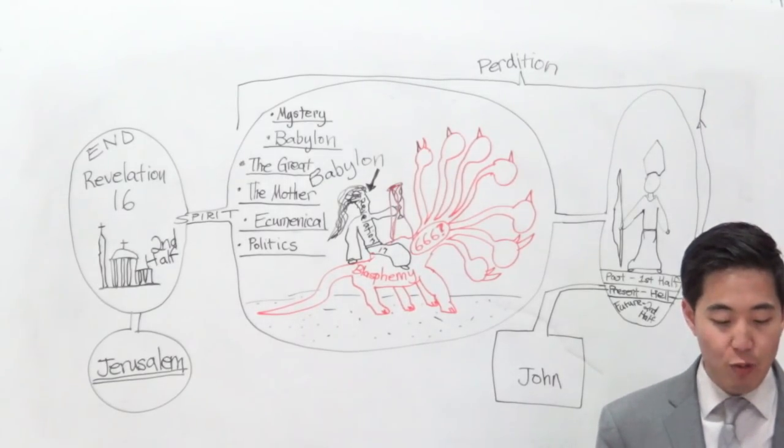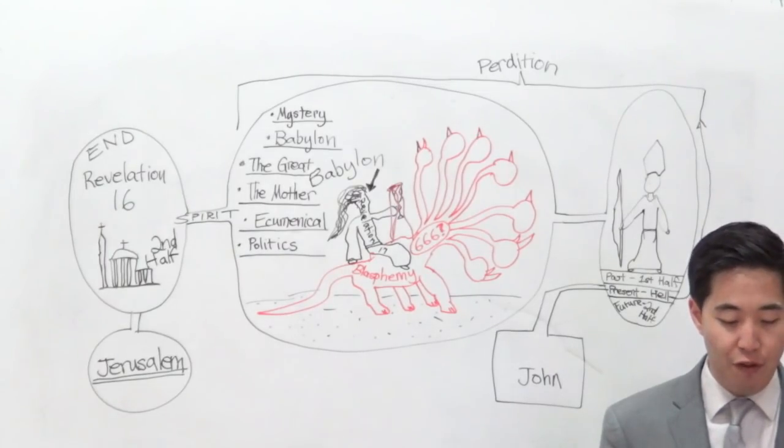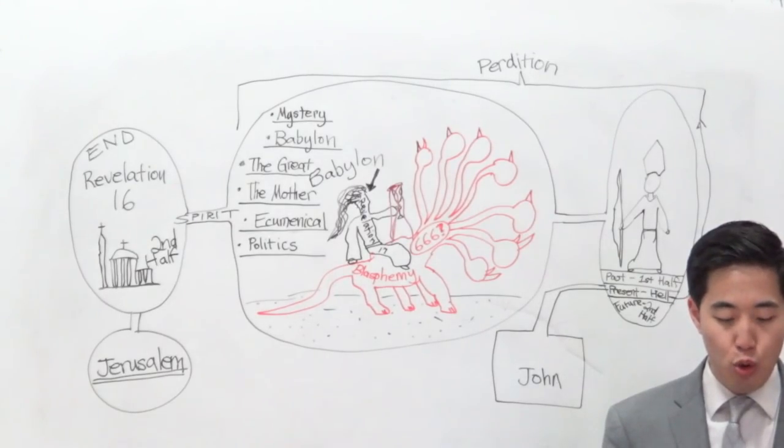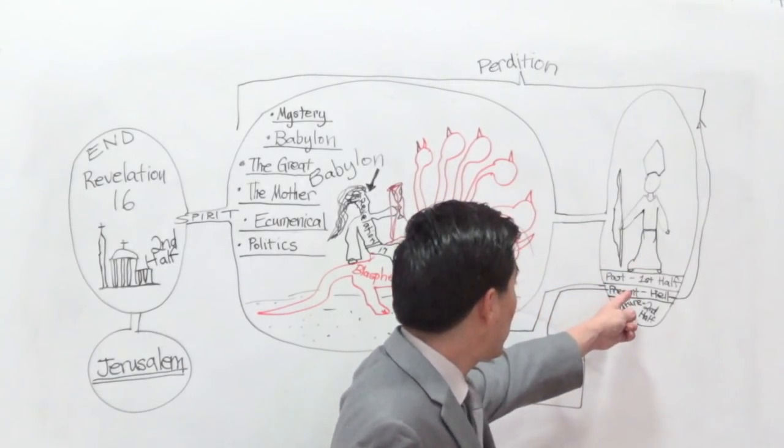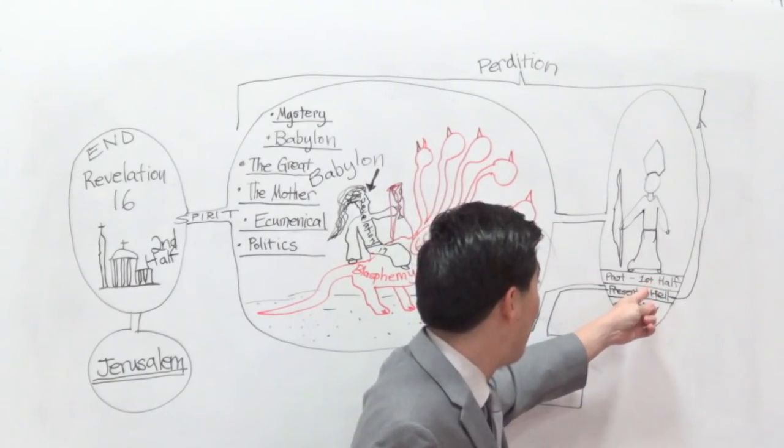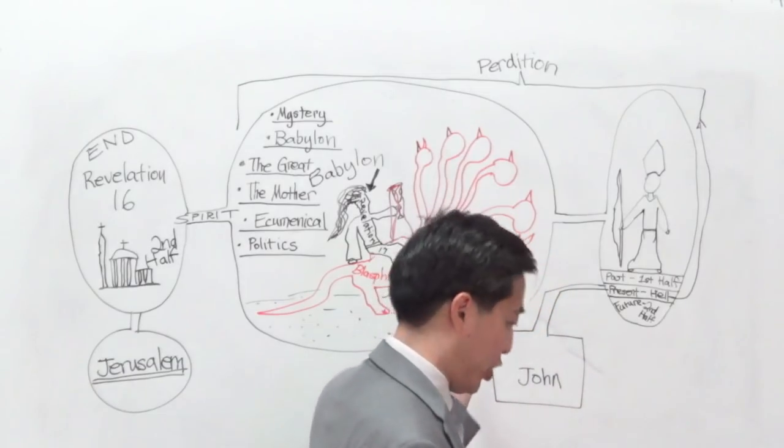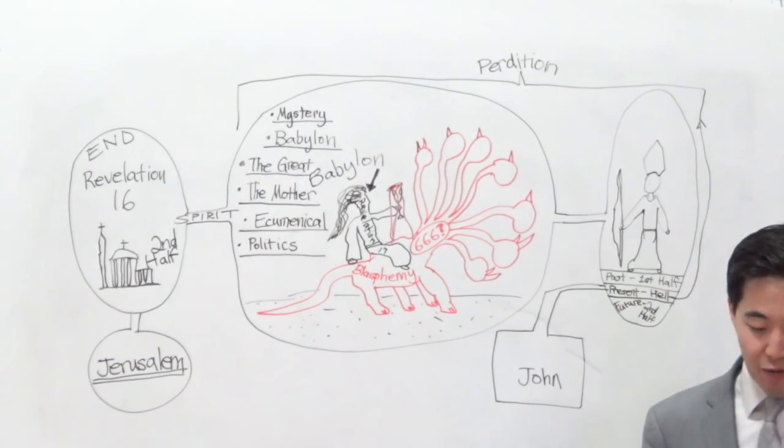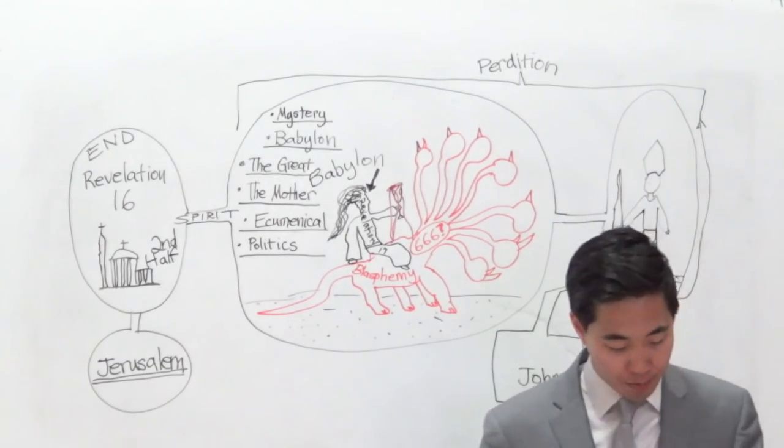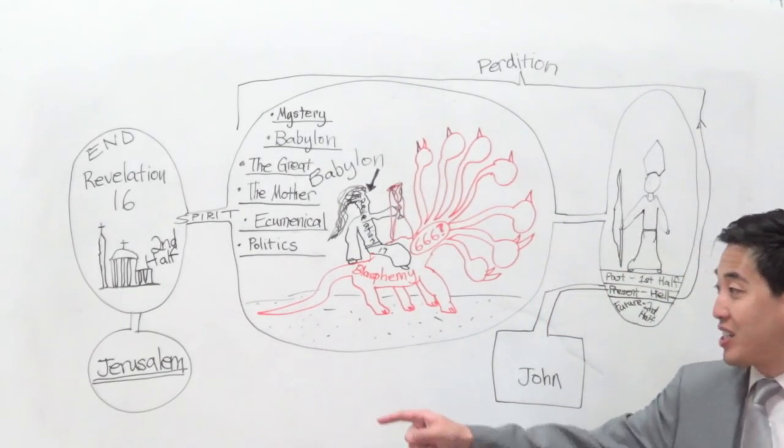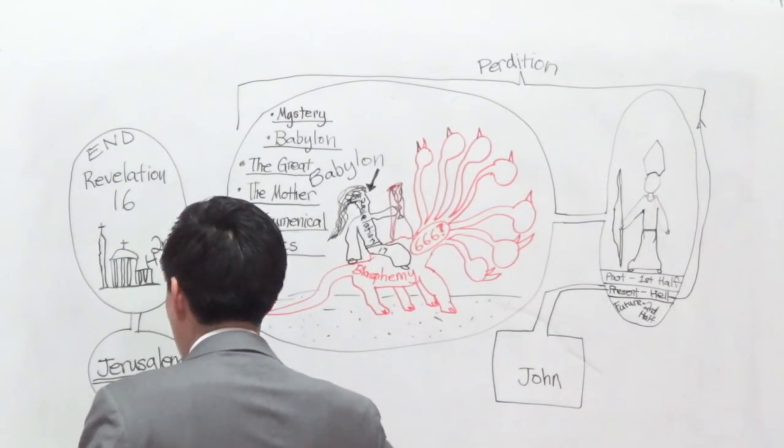Since we know that's the Antichrist, let's look at verse 3. Let no man deceive you by any means, for that day shall not come except there come a falling away first, and that man of sin be revealed, the son of perdition. Wait a minute, he's called the son of perdition. Why? Because he went to perdition.